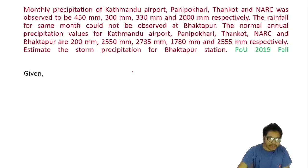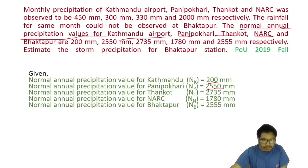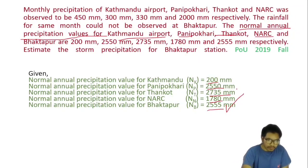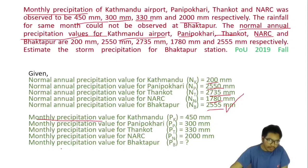The normal annual precipitation values for Kathmandu Airport, Panibukhari, Thangkut, Narg and Voktapur are 2,200, 2,550, 2,735, 1,780 and 2,555 mm respectively. The monthly precipitation for Kathmandu, Panibukhari, Thangkut and Narg are 450, 300, 330 and 2,000 mm respectively. We have to find the monthly precipitation of Voktapur using the same normal ratio method formula.